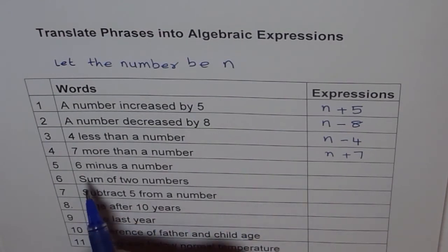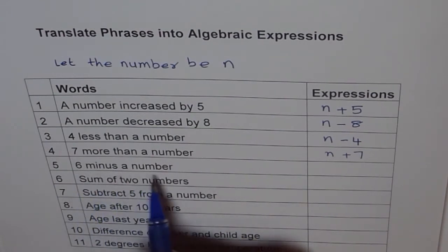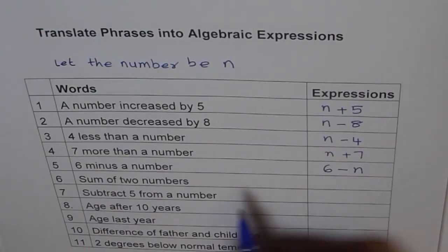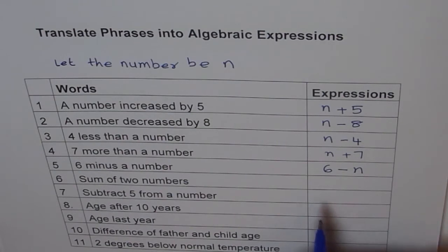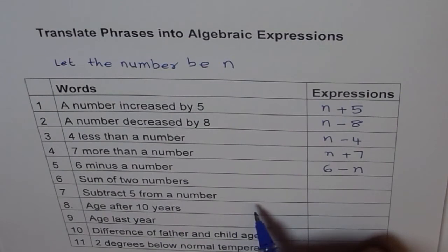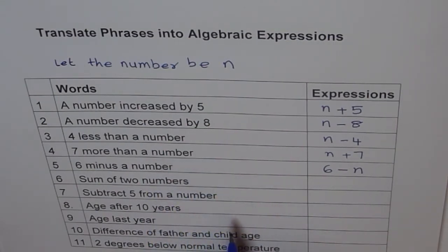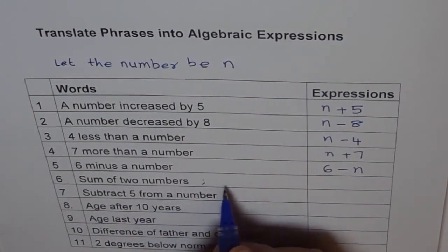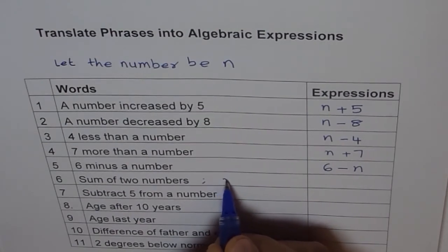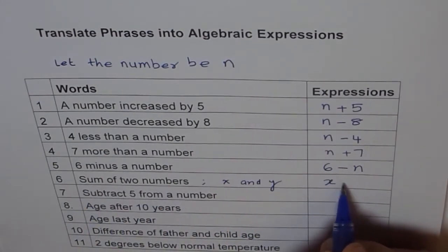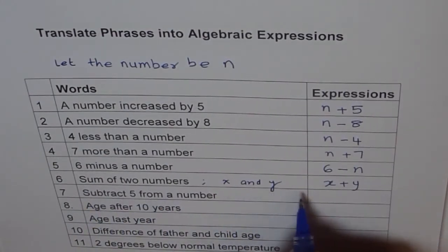6 minus a number. Here you have 6 and then you minus a number from it. So this one should be 6 minus a number. So try to get these things. They are slightly confusing at moment. Once you read it once again, it will be okay. Sum of 2 numbers. Let the number be n. So let other number be m. So we will say let 2 numbers be, let us say x and y. Then sum of 2 numbers is x plus y.